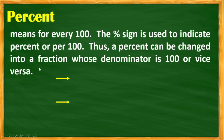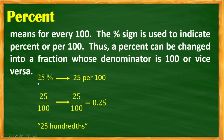Percent means for every 100. The percent sign is used to indicate the percent, or 'for 100.' Thus, the percent can be changed into a fraction whose denominator is 100, or vice versa. Take a look at this: 25 percent — we can write this one as 25 per hundred. Then 25 hundredths can be expressed as a decimal, so we can read this as 25 hundredths.